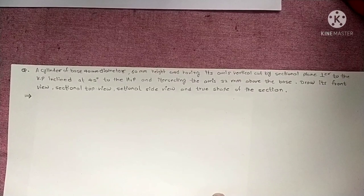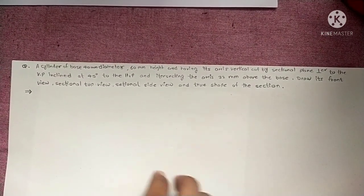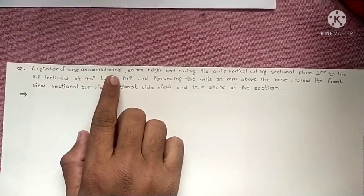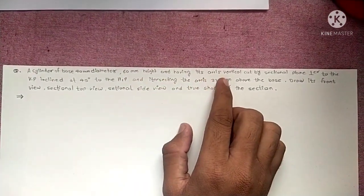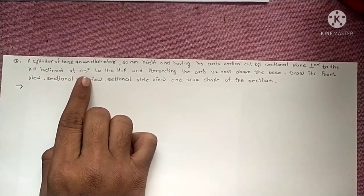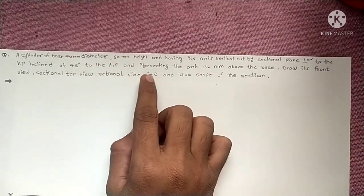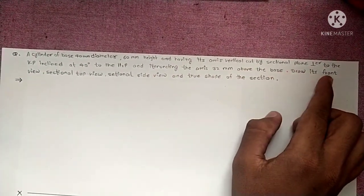I have discussed one problem of cylinder. The problem is a cylinder of base 40 mm diameter, 60 mm height, having its axis vertical, cut by a sectional plane perpendicular to the VP, inclined at 45 degrees to the HP, and intersecting the axis 32 mm above the base. Draw its front view.